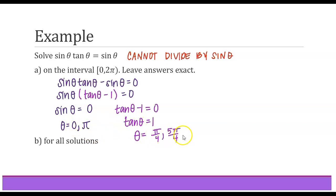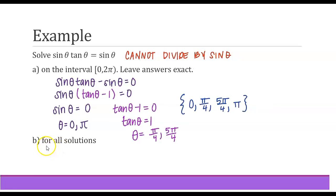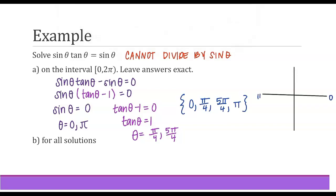So these four angles — 0, pi over 4, 5 pi over 4, and pi — solve the original equation from 0 to 2 pi. We list all four in set notation from least to greatest: 0, pi over 4, 5 pi over 4, and pi. Now to find all solutions, let's sketch where these angles are on the unit circle. The angles 0 and pi are quadrantal angles, and pi over 4 is in quadrant 1, with 5 pi over 4 directly across in quadrant 3.